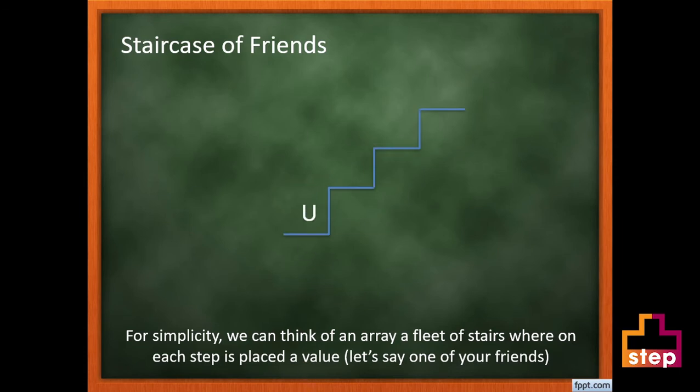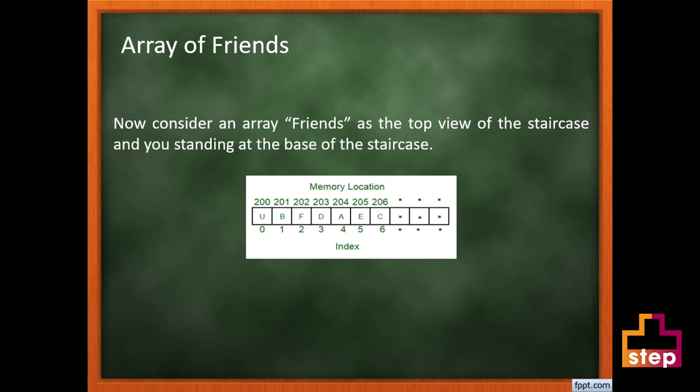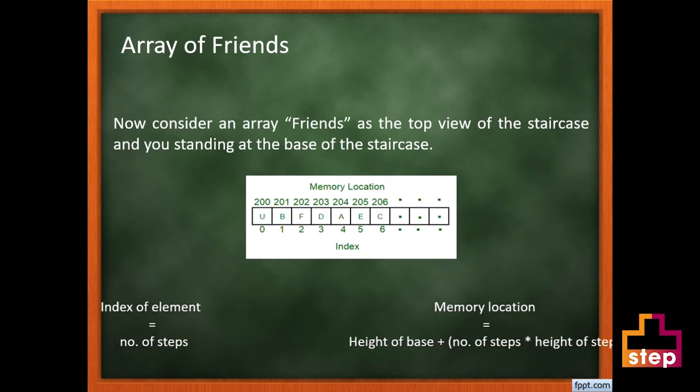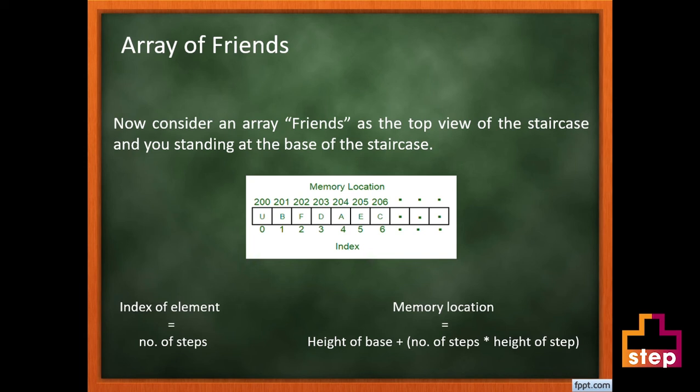On each step is placed a value — let's say one of your friends. Each step has a height: 200, 201, 202, and so on. The staircase depicts an array, with the number of steps becoming the index and the height of each step becoming the memory location of each element in that array.